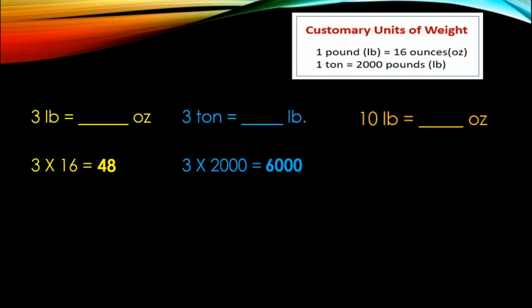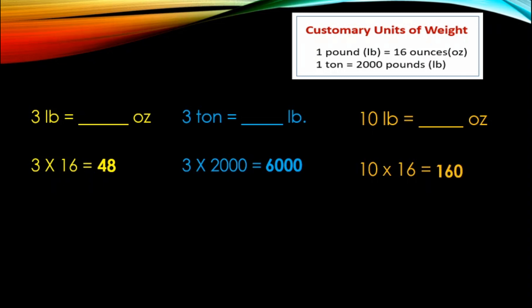And for our next problem: 10 pounds equals how many ounces? Pound to ounces — left to right, larger unit to smaller unit, so you will do multiplication. 10 times 16, the answer is 160. 10 pounds equals 160 ounces.